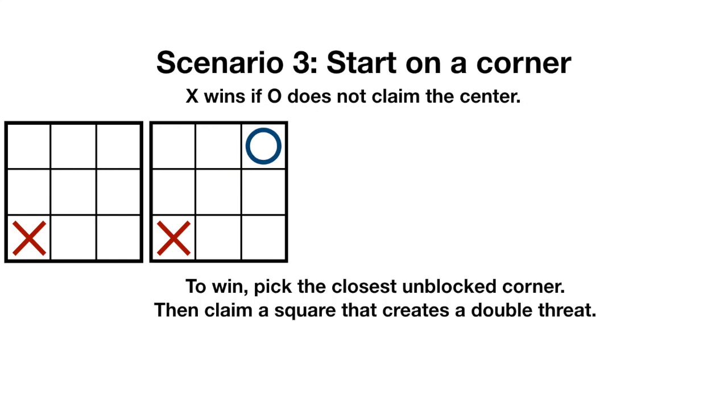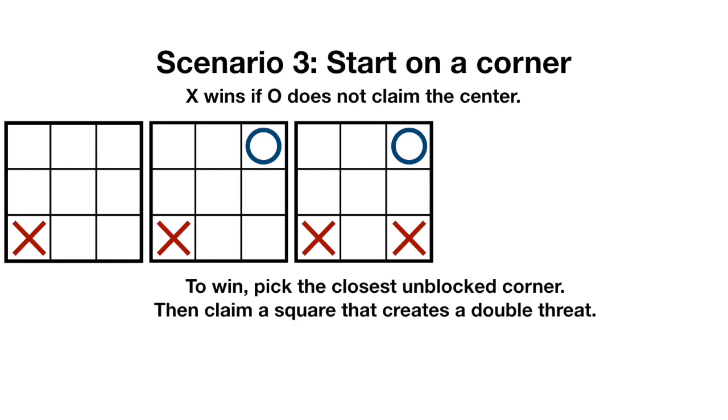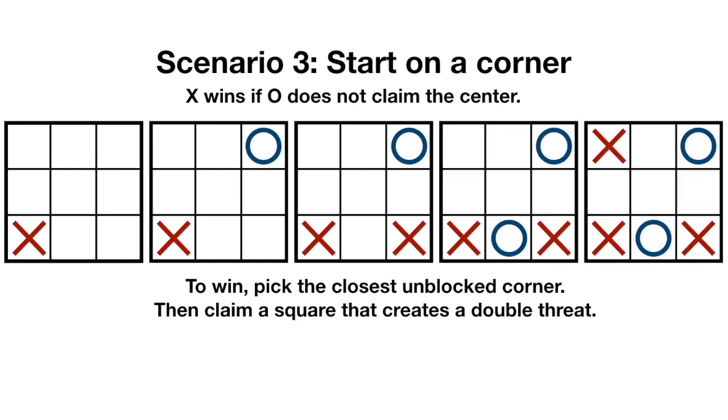Finally, if O chooses the far corner, x can choose the closest corner, O blocks, x then creates a double threat and wins the game.